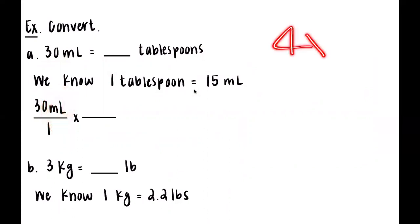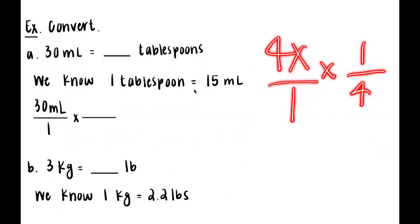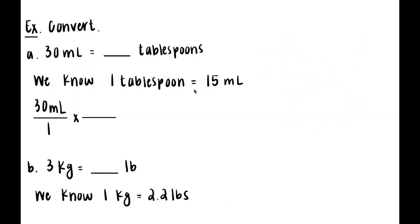This 4 over 4 cancels out - or even if we had 4x times one-fourth, this 4 over 4 cancels out. That's what we want to do here. We want milliliters in the denominator and we can go straight to tablespoon because they have an equivalent measurement. We know for every one tablespoon there are 15 milliliters, so that's what we can fill in here.